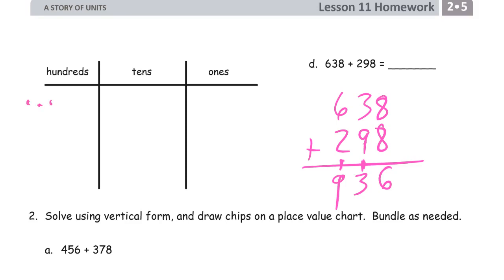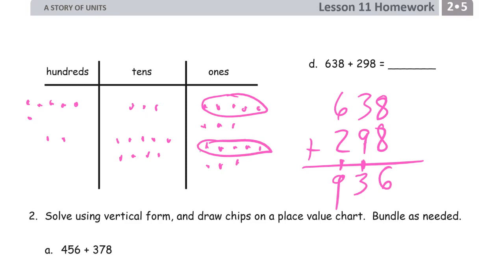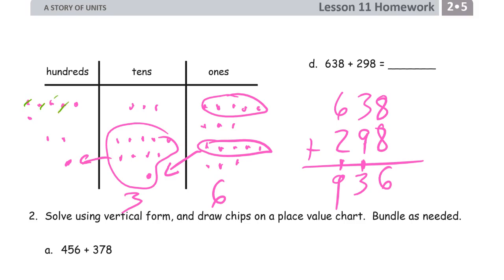Drawing six hundreds for 638 and two hundred ninety-eight. I can see two five-group rows are going to make 10. And these 9 tens plus that one more makes a hundred. Two sets of three — that's six ones. And then three tens left behind. And let's count our hundreds: 1, 2, 3, 4, 5, 6, 7, 8, 9 hundreds. Nine hundred thirty-six.